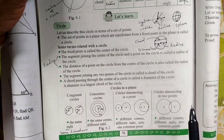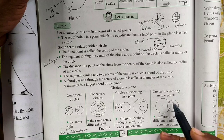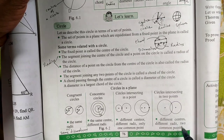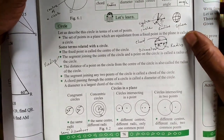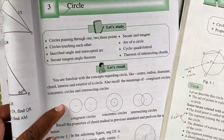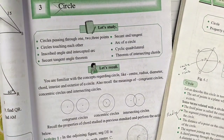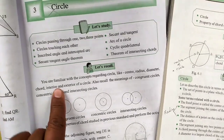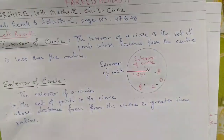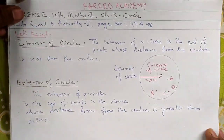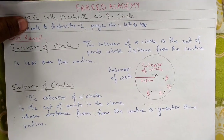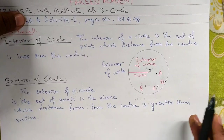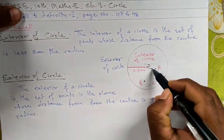Next, two circles can also intersect at two points with different centers. The interior of a circle is the set of points whose distance from the center is less than the radius.